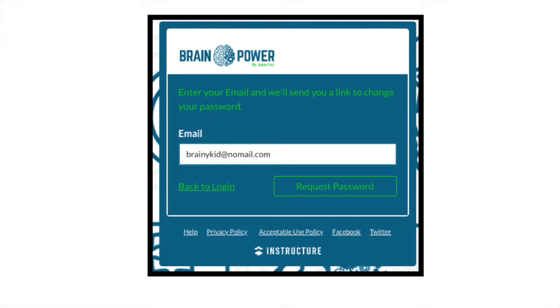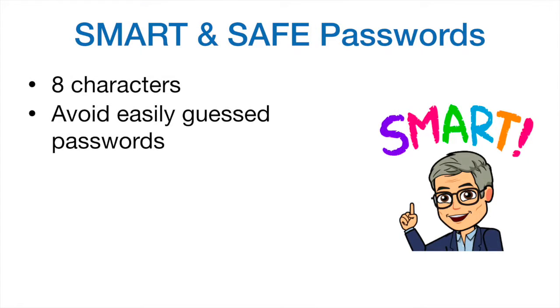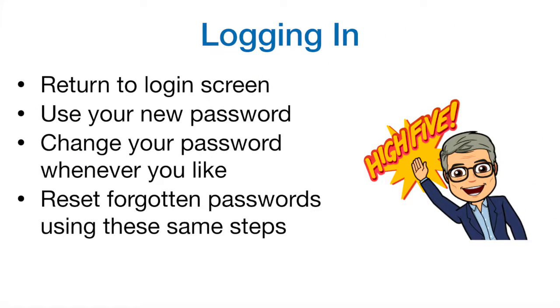Canvas will then ask you to enter the email address you provided to BrainPower — the one listed in your email. Then check that email address again for a new message. That message will contain a password reset link. Click on it and then set your password by typing it and confirming it. Please choose a smart password. You're required to choose a password that is at least eight characters long. Once you have set your password, you can go back to the Canvas login screen and log in using the login ID and the password you just created. You can change that password in Canvas at any time.